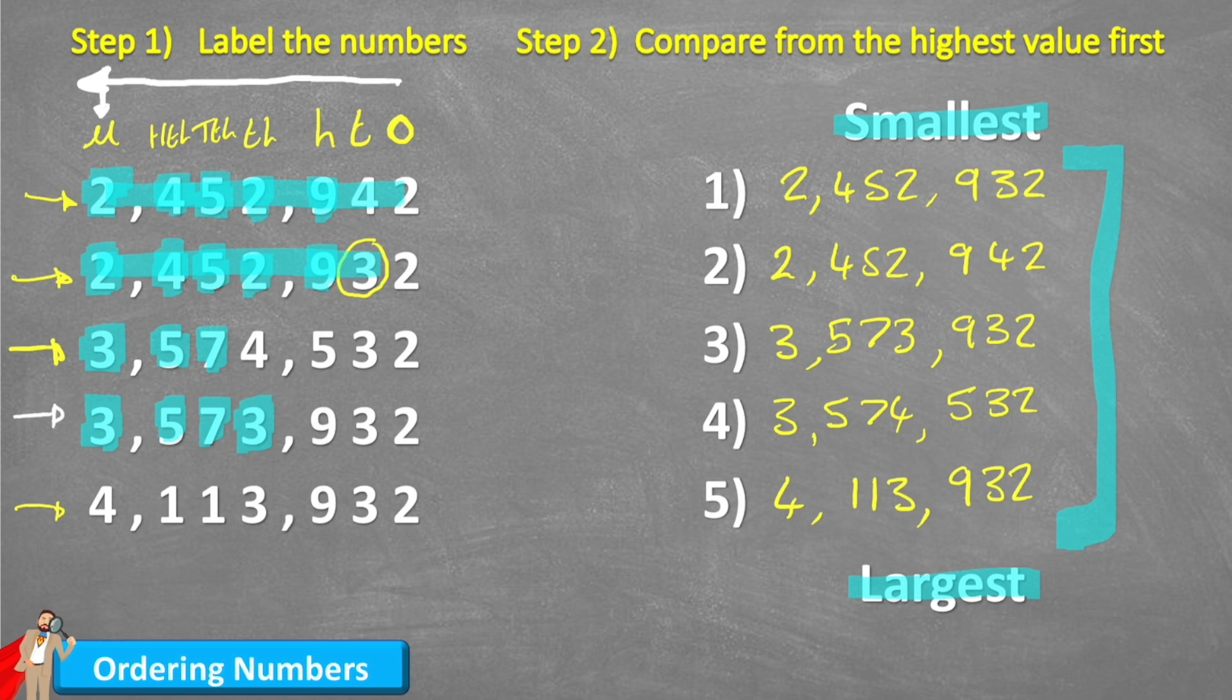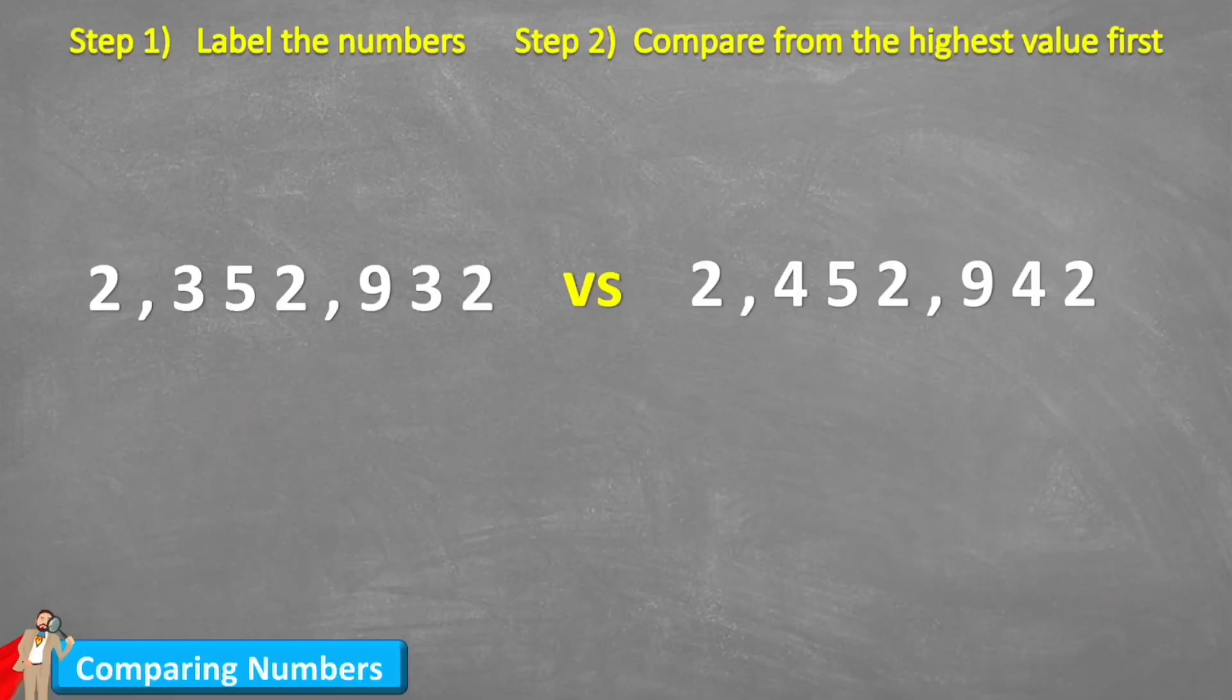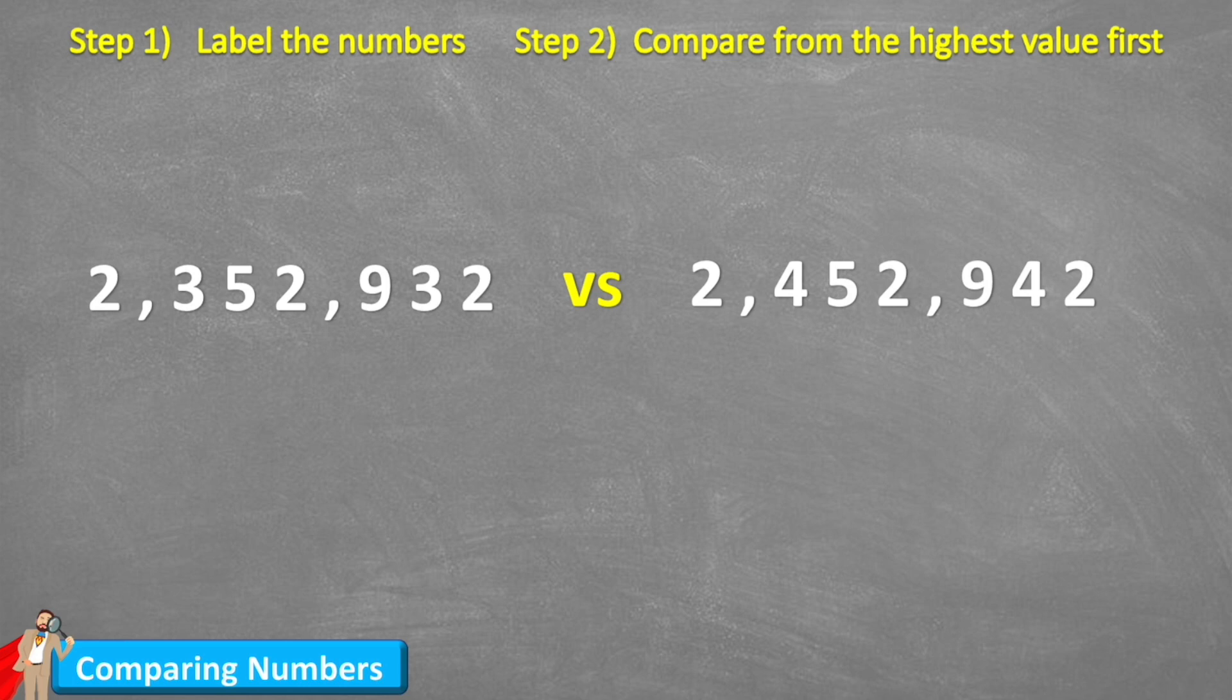Okay, so that's ordering numbers. Now let's have a look at comparing numbers. So I've got these two numbers here that I want to compare. And at the minute, I've got this versus sign here. But I'm going to replace that with my comparison signs in a minute, which are greater than, less than, or equal to. And I'm going to decide which one of these is going to slot into that versus position.